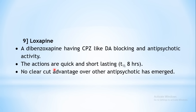Loxapine is a dibenzoxapine with action similar to CPZ — dopamine receptor blockade gives antipsychotic action — but its onset of action is quick while duration is short. The half-life is only 8 hours, so it is a short-acting drug requiring more frequent doses. There are no clear-cut advantages over other antipsychotics, so it is not a popular drug.